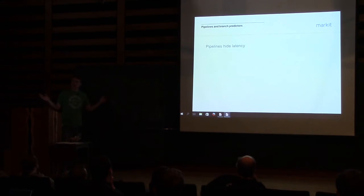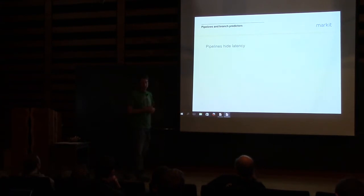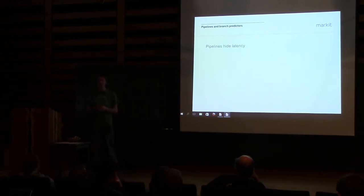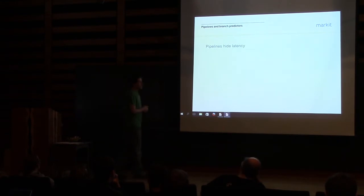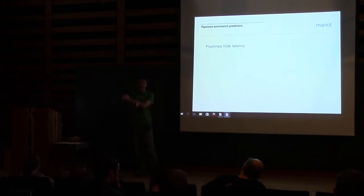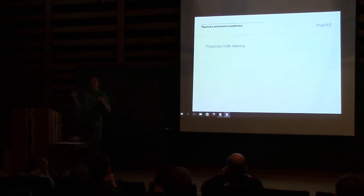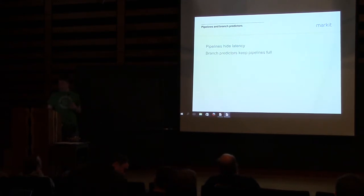For the pipeline to work you need to avoid data dependencies and ensure the next code to execute is ready. The branch predictor's job is essentially to keep the pipeline full. When the processor encounters an if statement, it doesn't want to stall waiting for the comparison to resolve. So it guesses — 'I bet this is true because it's been true the last hundred times' — and usually it's right.